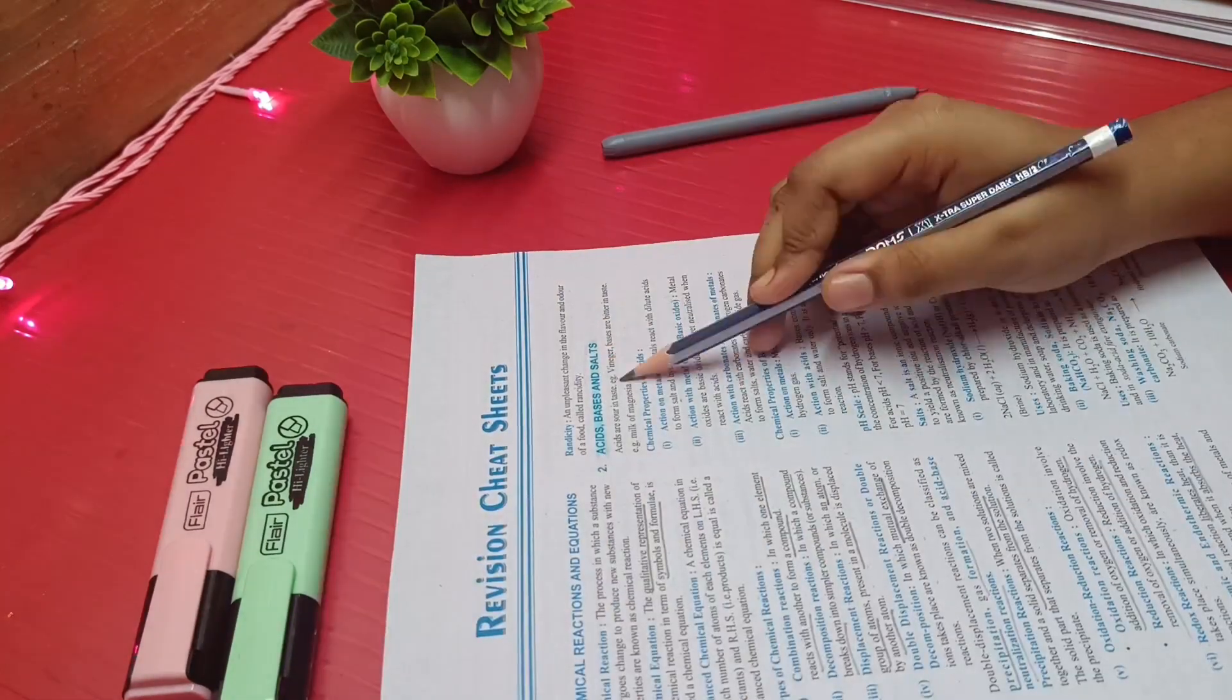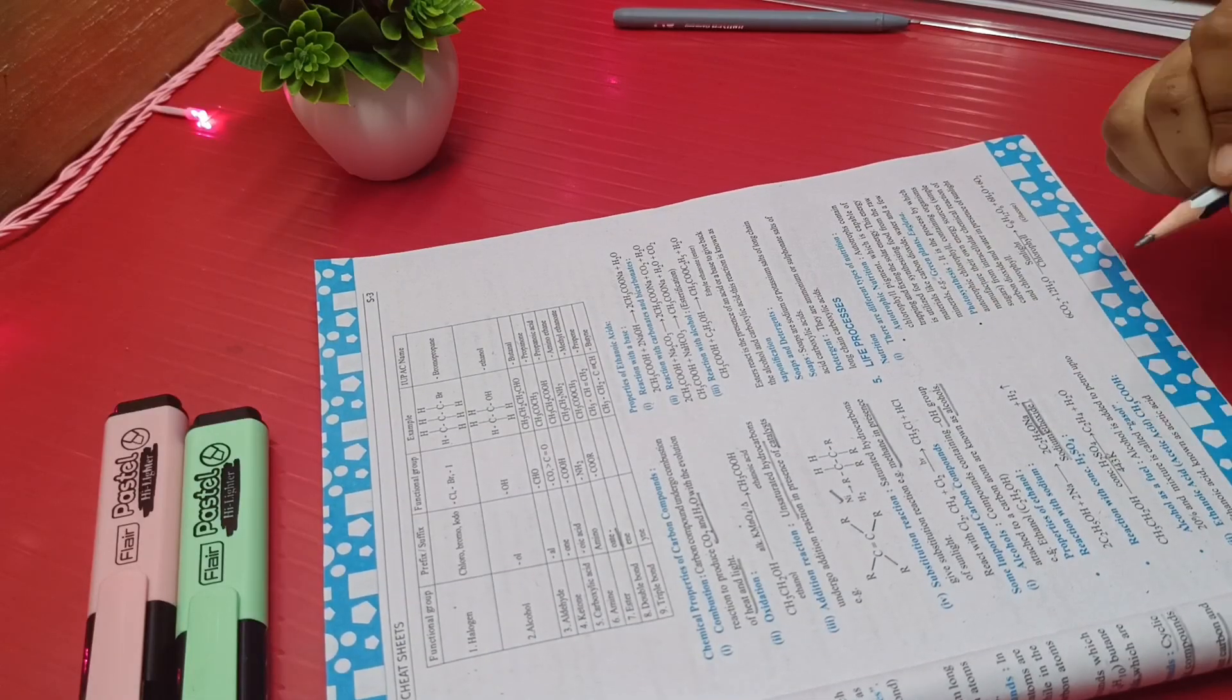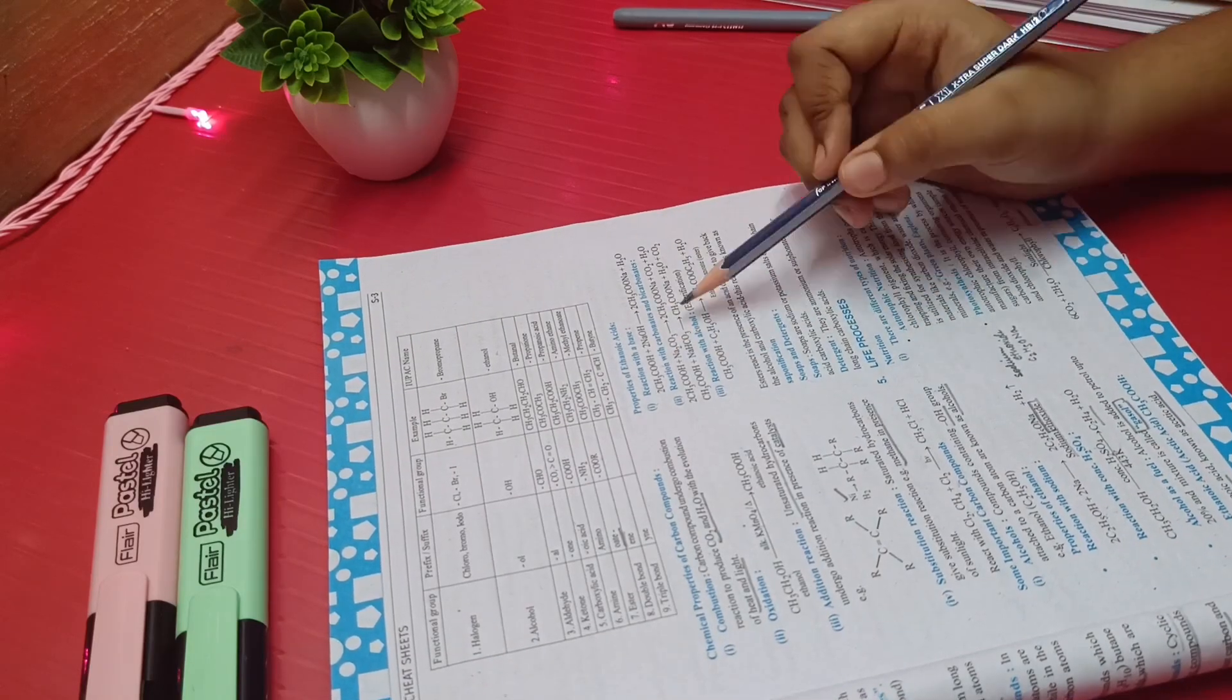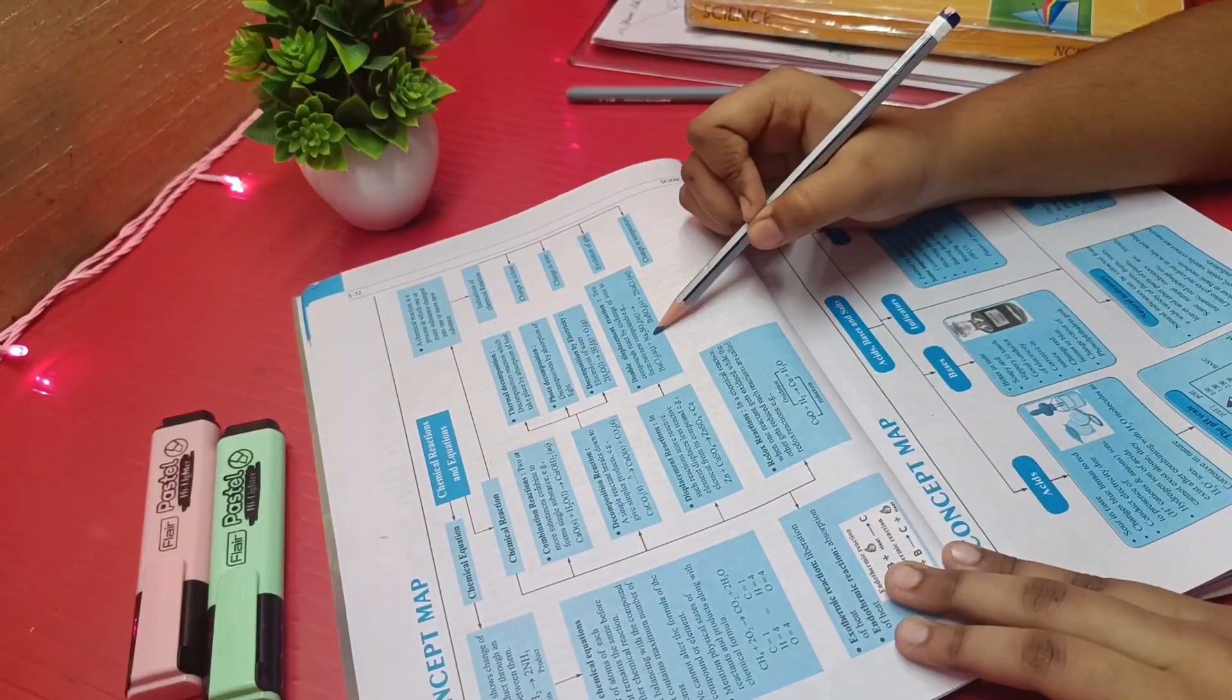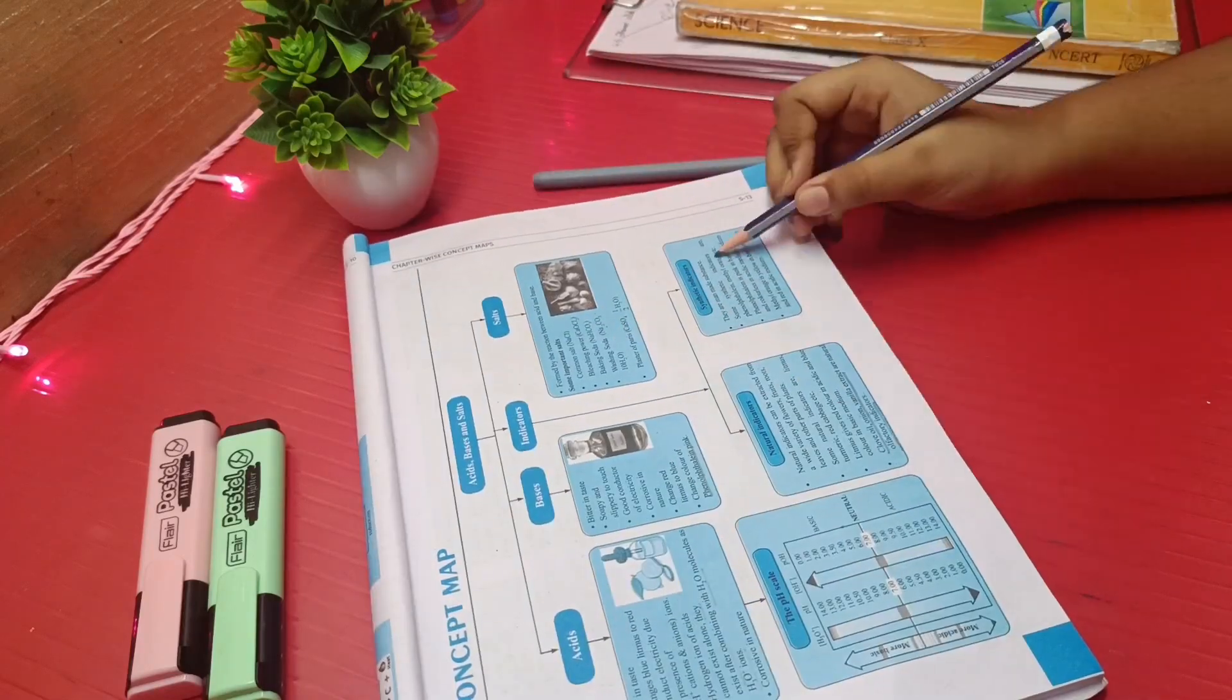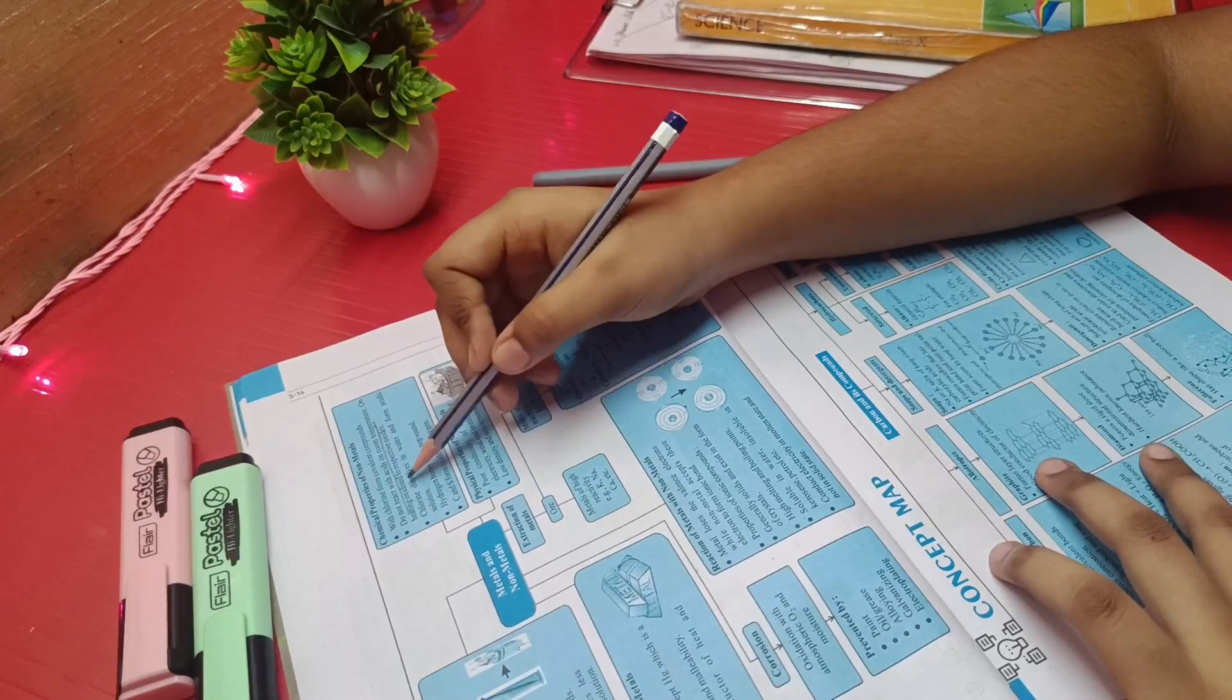I really find them helpful as in a very short period of time, you can revise the entire portion. I find these sheets really helpful during the last-minute revision. The most interesting thing about this book is that it also includes concept maps. You can revise the entire chapter. It is given in the form of flowcharts and also includes pictorial representations.